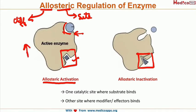When we have Allosteric Inactivation, or an Allosteric Inhibitor binding to the Allosteric site, this will deform the active site. Now the substrate cannot bind, or the rate of substrate binding will decrease significantly. This is Allosteric Regulation.